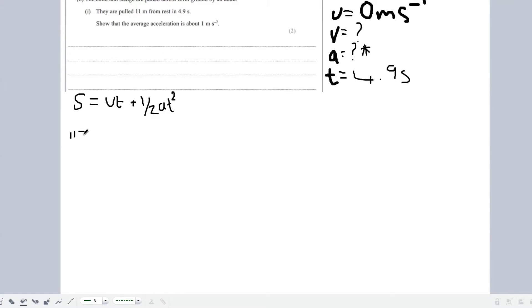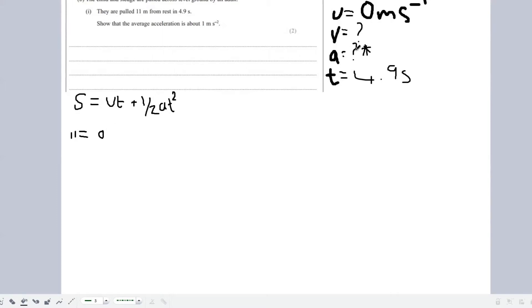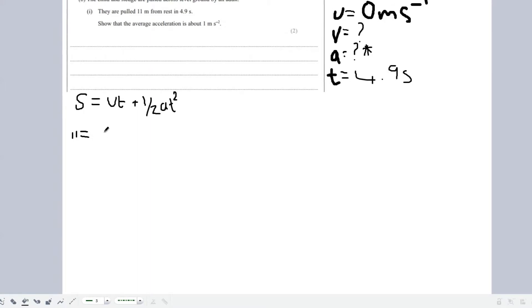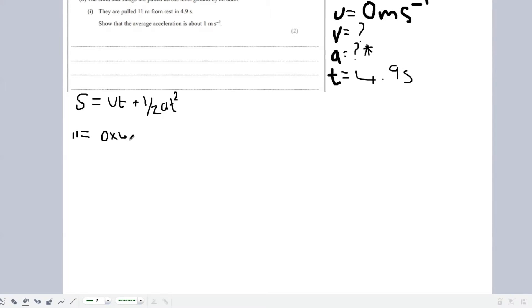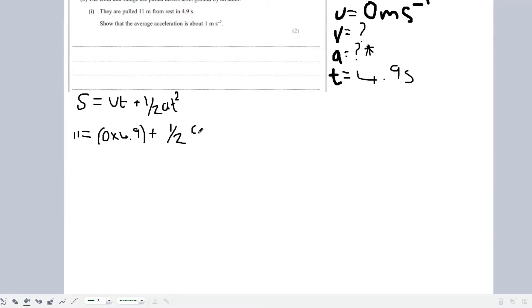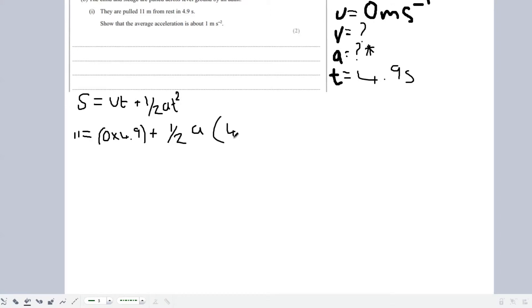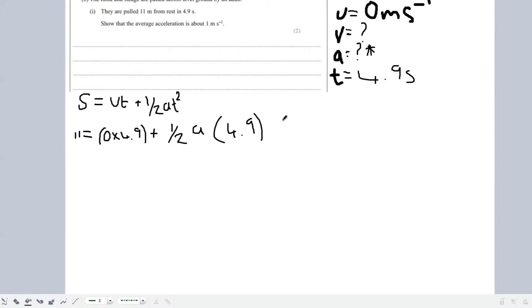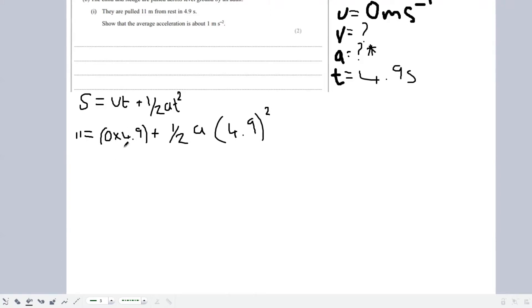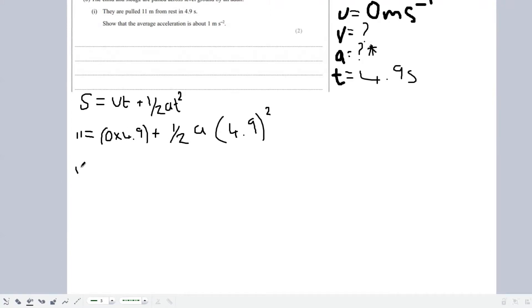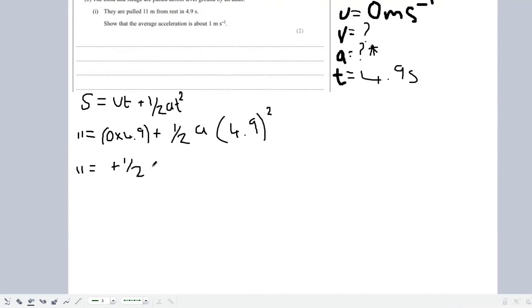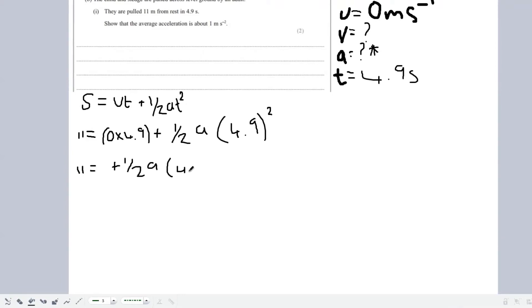So, let's sub in the numbers. We have 11. U is 0, T is 4.9. Let's put 0 times 4.9 plus 1/2 A, which we don't know, so we'll just leave it as A, and then 4.9 squared. Looking at this part, 0 times anything is 0. So that leaves us with 11 equals 1/2 A times 4.9 squared.